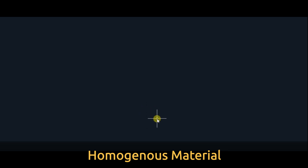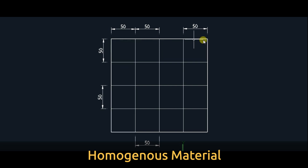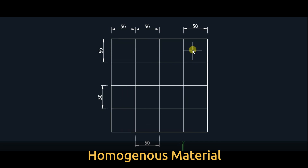Let us see a simple example for homogeneous material. Just look at this — some squares I have shown here. We can see this outer square is made up of 16 smaller squares. For this square, the property is 50 by 50, or it has an area of 2500 square units. For every smaller square also, it is the same. At any point you take, the property is same — its dimension is same, so the area is same. So this is an example for a homogeneous material in two dimensions.